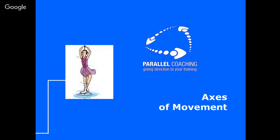Most people get confused by this, mostly because it's a new topic. And at level two, you don't really go into axes of movement, even though you go into joint actions. Now, if you understand joint actions, you will understand axes of movement. So joint actions are really the fundamentals in understanding axes of movement.